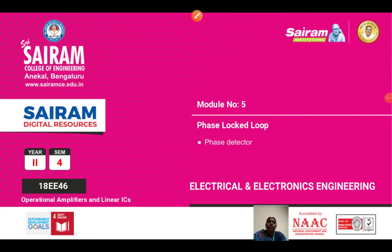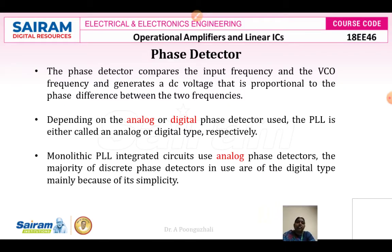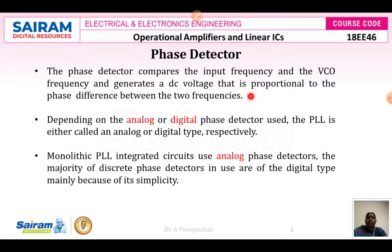Good morning students. Now we will go for the next topic: the phase detector. We will see the individual components of your phase-locked loop, and the first topic we are going to see is your phase detector. Basically, the phase detector is going to compare the input frequency and the VCO frequency. By comparing these two frequencies, it is going to generate a DC voltage proportional to the phase difference. We can classify a phase detector as an analog or digital phase detector.